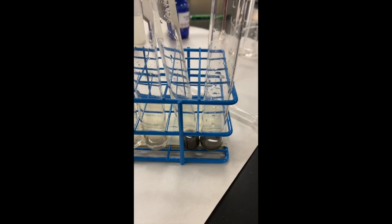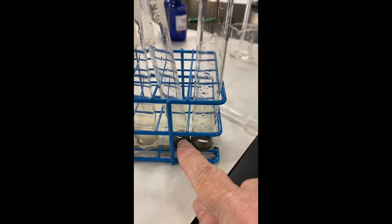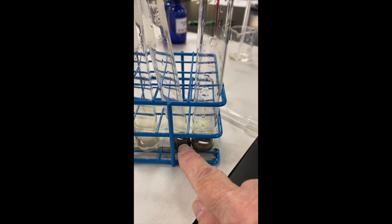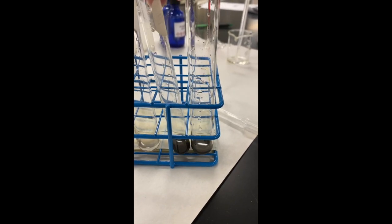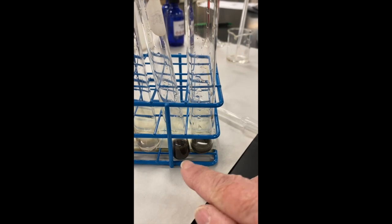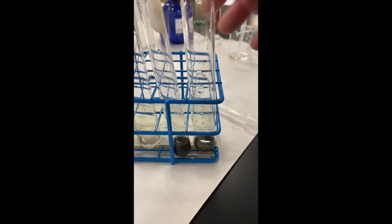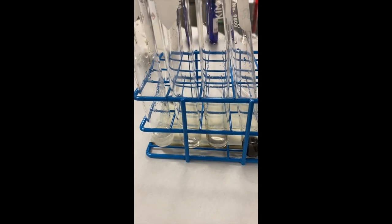But right off the bat, I saw a big difference on formalin, which is a form of formaldehyde. Immediately when I put in the drops, it turned this dark color and the same thing with acetaldehyde. These other three, we're going to see what happens.